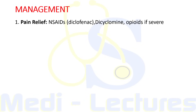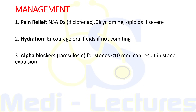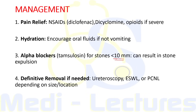For pain relief we can give NSAIDs like diclofenac, smooth muscle relaxants like dicyclomine, and opioids if pain is very severe. We must encourage sufficient hydration if the patient is not vomiting. Alpha blockers can help in expelling stones less than 10 millimeters. Definitive removal by a surgeon is required if the stone size is more than 10 millimeters, and can be performed via ureteroscopy, extracorporeal shock wave lithotripsy, or percutaneous nephrolithotomy depending on size and location.